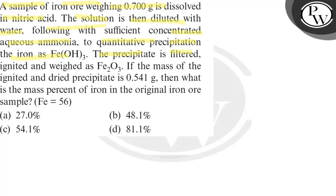The precipitate is filtered, ignited and weighed as Fe₂O₃. If the mass of the ignited and dried precipitate is 0.541 gram, then what is the mass percent of iron in the original iron ore sample?